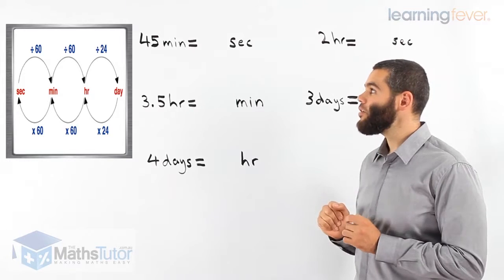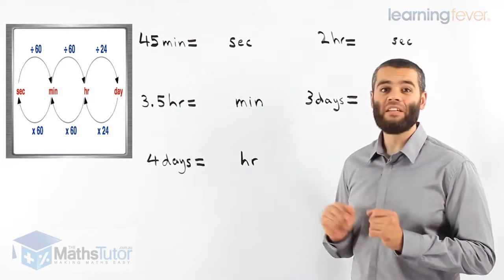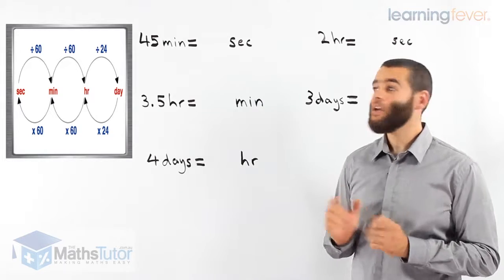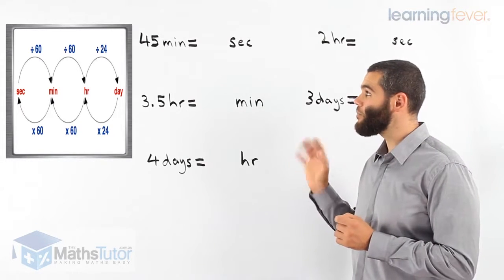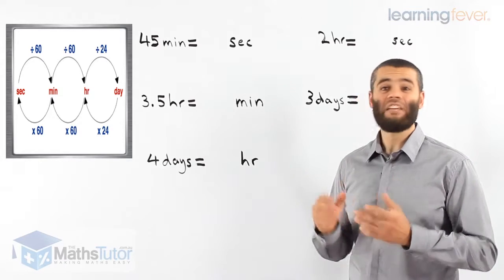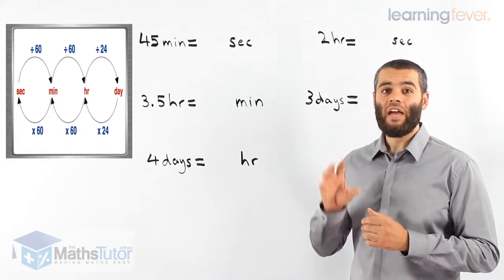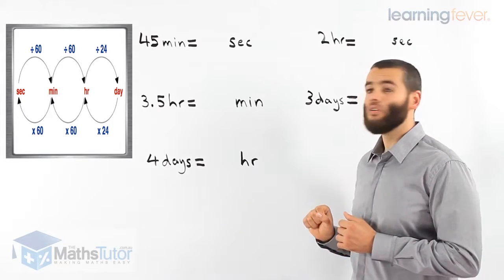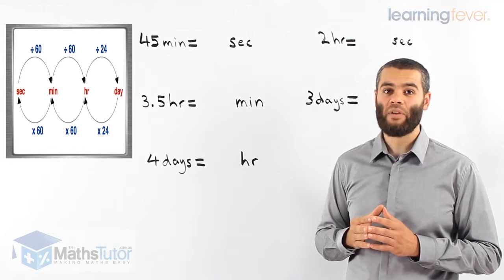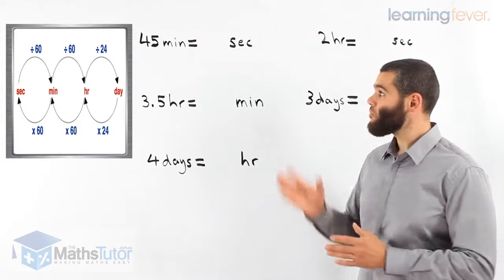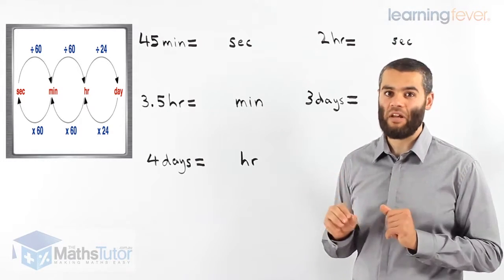If we look over here, we can see this diagram. This diagram shows that we can convert seconds to minutes, minutes to hours, and hours to days, and going back: days to hours, days to even minutes, and even hours to seconds. Any way through, we can work them out using this process and diagram. We need to understand it — if we understand it, it's as if we've memorised it.